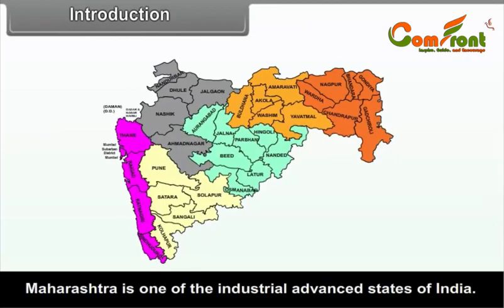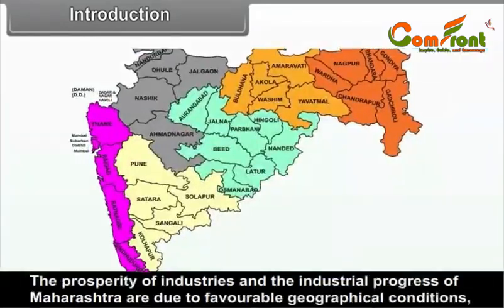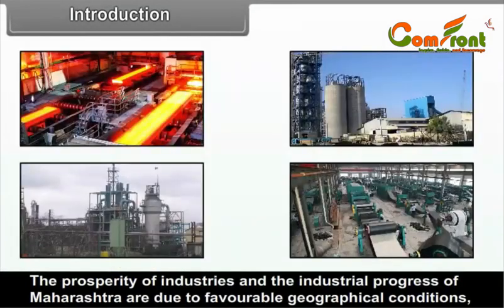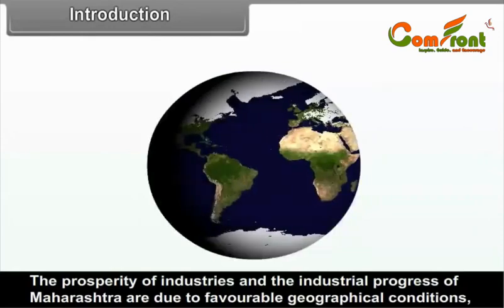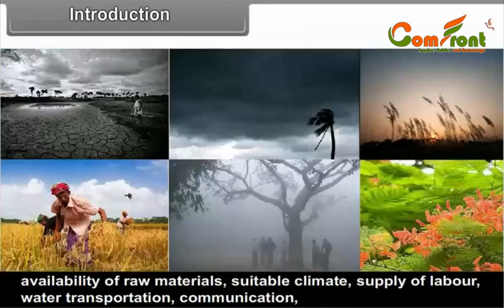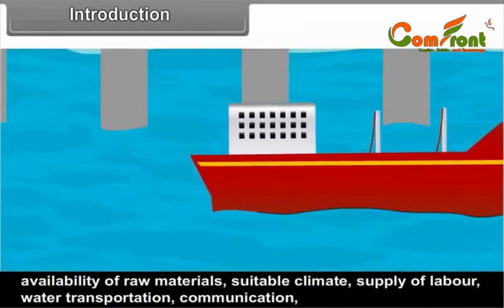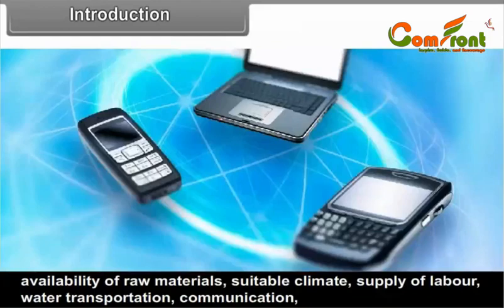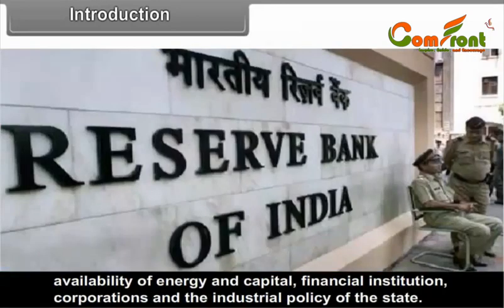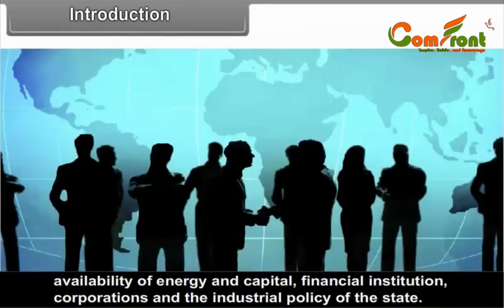Maharashtra is one of the industrially advanced states of India. The prosperity of industries and the industrial progress of Maharashtra are due to the favourable geographical conditions, availability of raw materials, suitable climate, supply of labour, water, transportation, communication, availability of energy and capital, financial institutions, corporations and the industrial policy of the state.